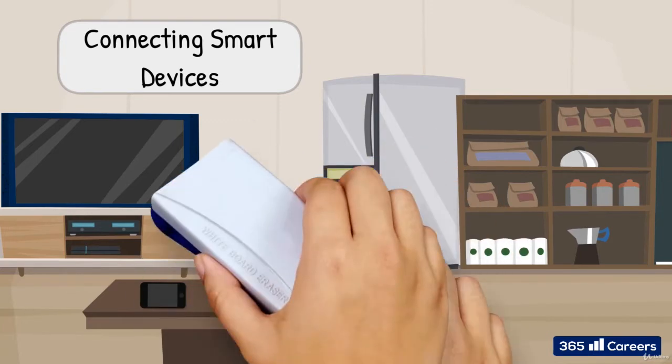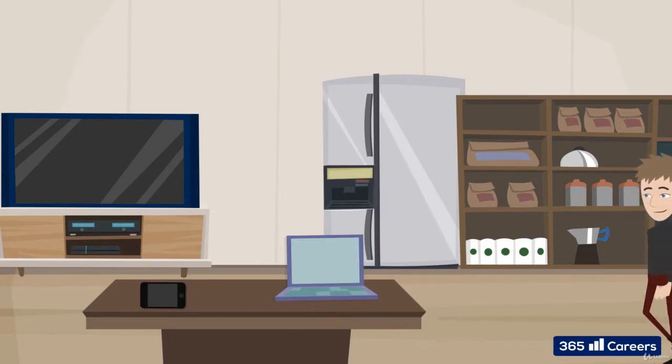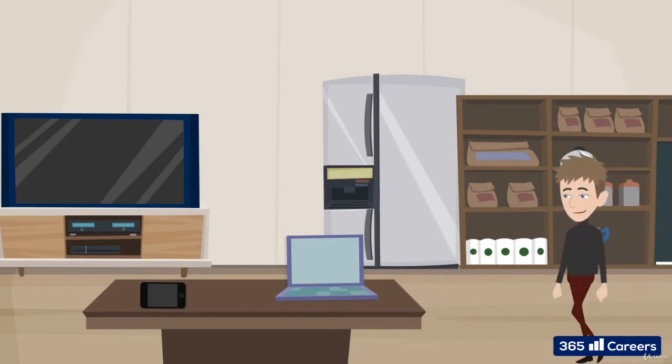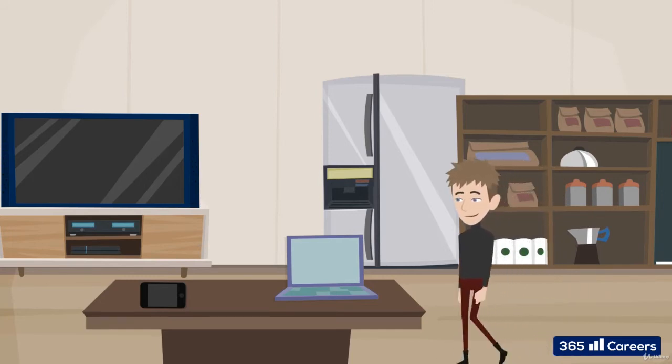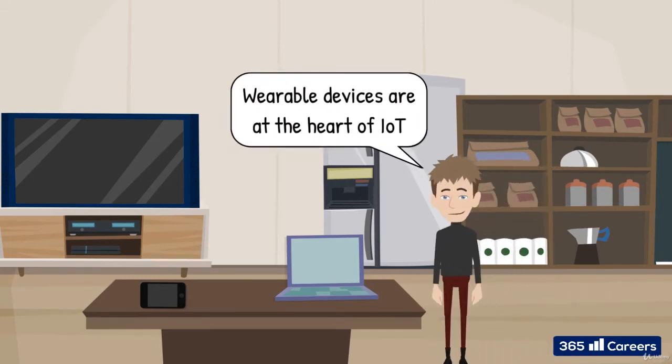Air conditioners that are connected with smartphones and track people's location to turn themselves on when you come home from work. Security systems connected to the internet, notifying you if suspicious activity is registered at your home. And many others.